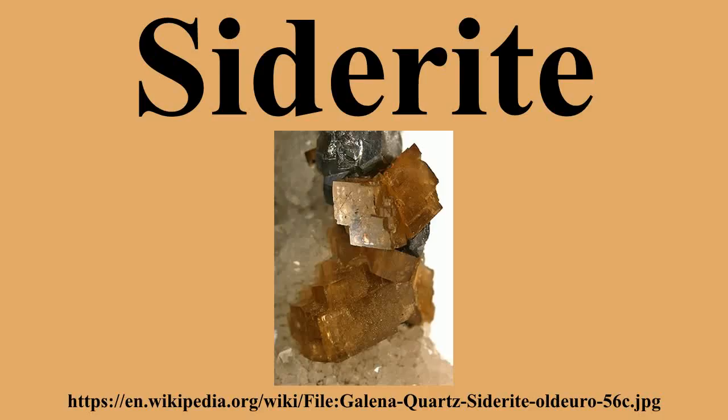Zinc, magnesium and manganese commonly substitute for the iron, resulting in the siderite-smithsonite, siderite-magnesite and siderite-rhodochrosite solid solution series. Siderite has a Mohs hardness of 3.75 to 4.25, a specific gravity of 3.96, a white streak and a vitreous or pearly luster.